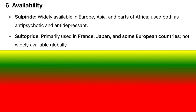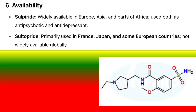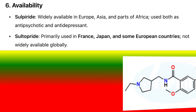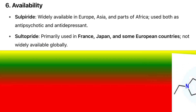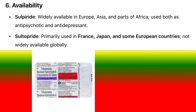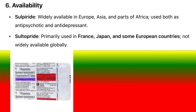6. Availability: Sulpiride is widely available in Europe, Asia, and parts of Africa, used both as an antipsychotic and antidepressant. Sultopride is primarily used in France, Japan, and some European countries, and is not widely available globally.